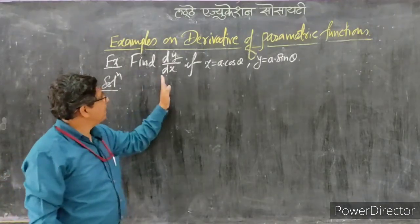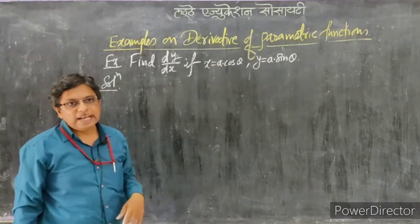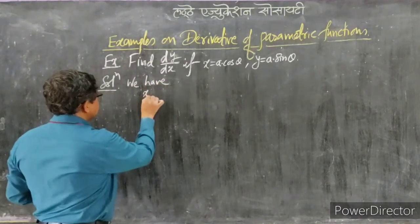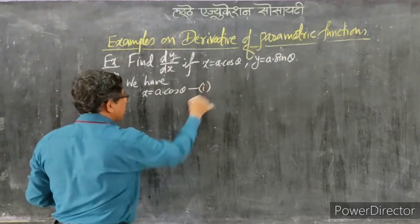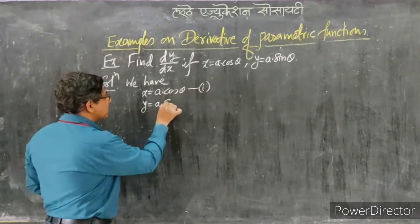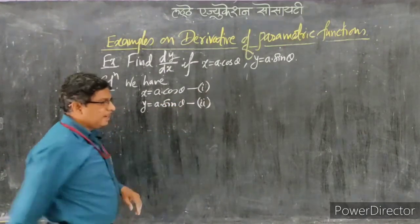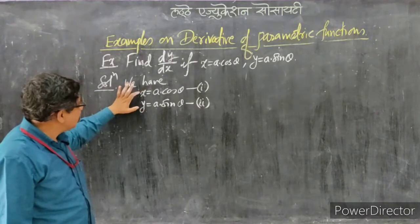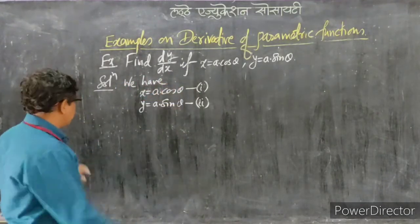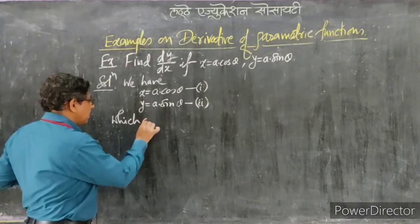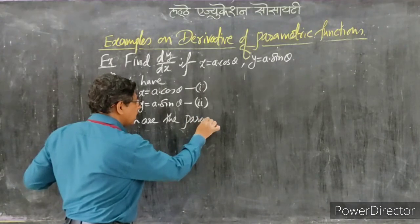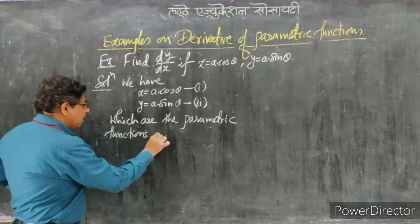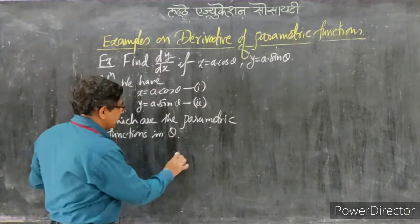Let us go for one more example. Find dy/dx if x = a·cos(θ) and y = a·sin(θ). We rewrite: x = a·cos(θ) — equation 1 — and y = a·sin(θ) — equation 2 — where a is a constant. Here x is a function of θ and y is also a function of θ, so both x and y are functions of the parameter θ. These are parametric functions in parameter θ.